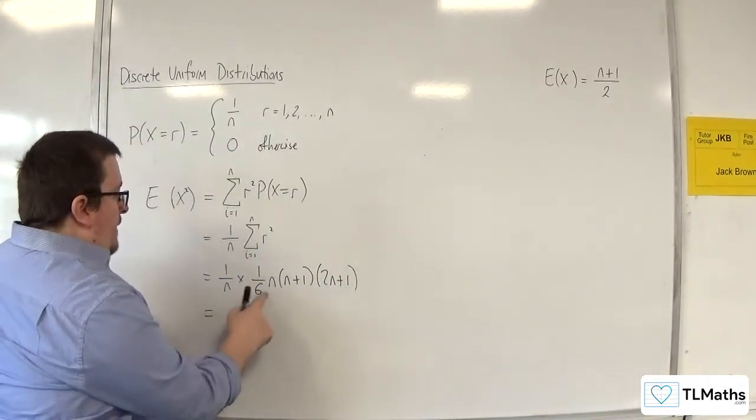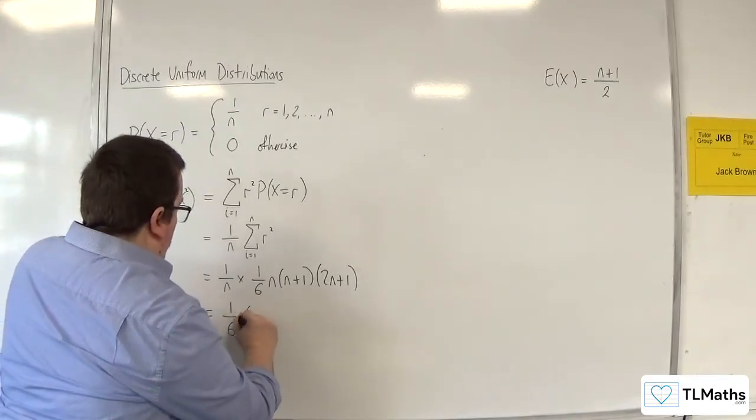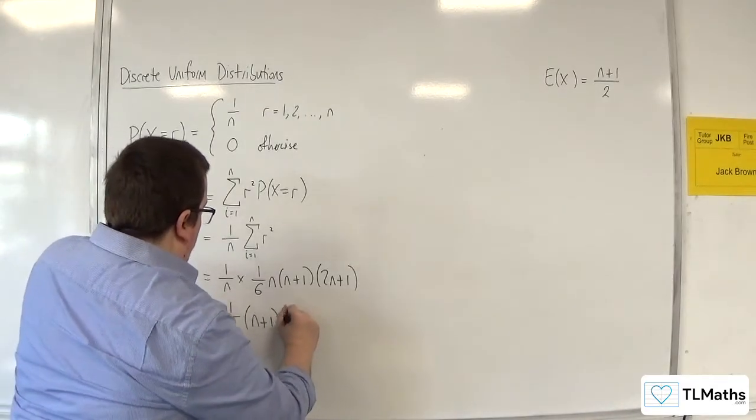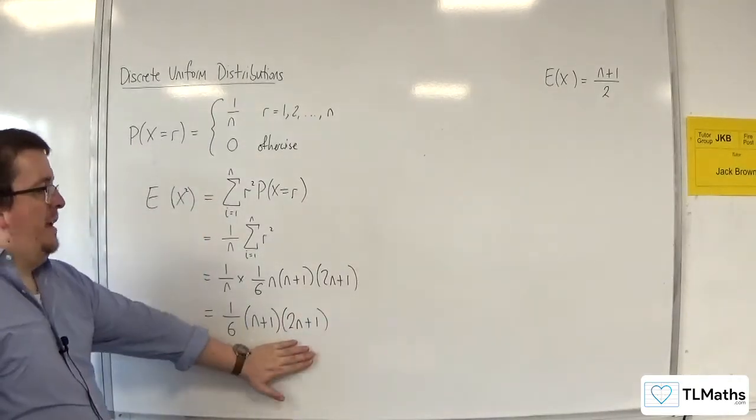So the 1 over n cancels with the n, and we get 1 over 6, n plus 1, 2n plus 1. So that's E of X squared.